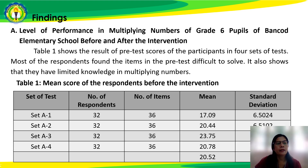Findings: Table 1 shows the result of pre-test scores of the participants in four sets of tests. Most of the respondents found the items in the pre-test difficult to solve. It also shows that they have limited knowledge in multiplying numbers.